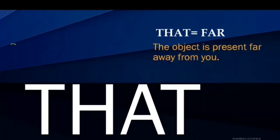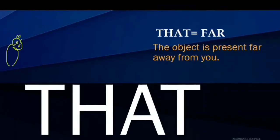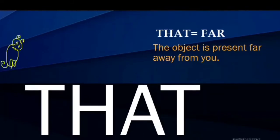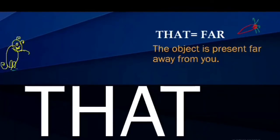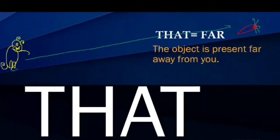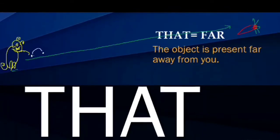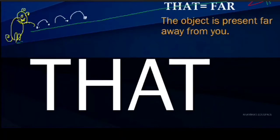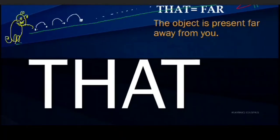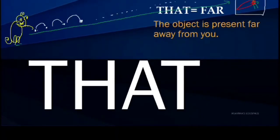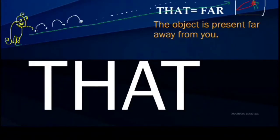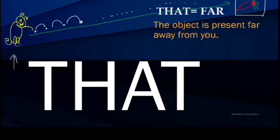So, how will you understand this? Suppose little bunny rabbit is here. Little bunny wants a carrot. And where is the carrot? The carrot is lying somewhere far away. Little bunny has to walk, run, run, run far away, and then little bunny will get the carrot. So, the carrot is present far away from little bunny.